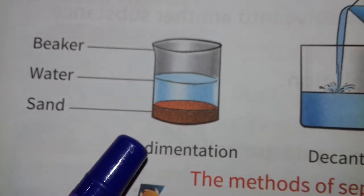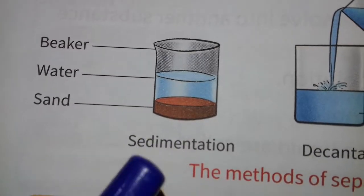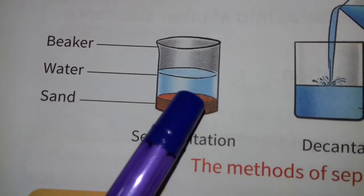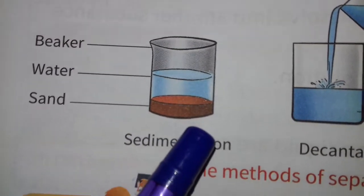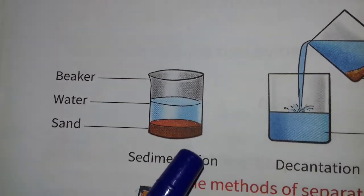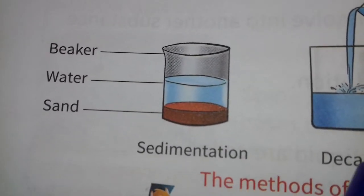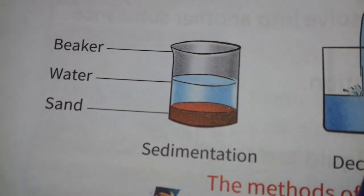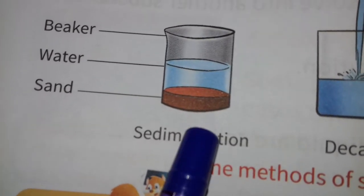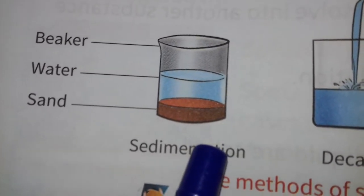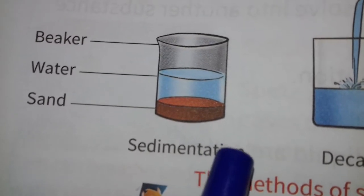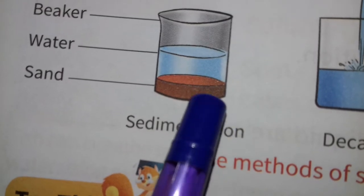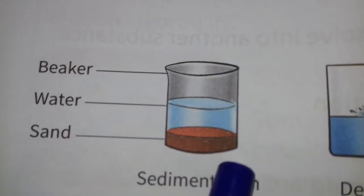When insoluble chalk powder or sand is mixed with water, the water looks white in color. Leave the water in the container undisturbed for a while. After some time, the chalk particles or sand settle down at the bottom of the container due to gravity. These particles of sand or chalk powder are known as sediment — this process is called sedimentation.